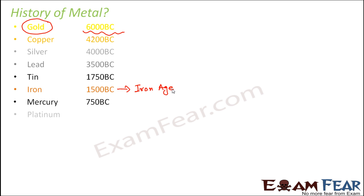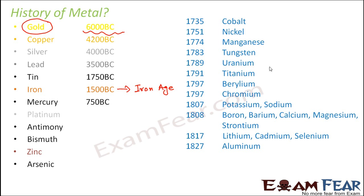Gradually, the process of discovering metals continued — mercury, platinum, antimony, bismuth, zinc, arsenic, and many more. We actually have a huge number of metals. Once the trend started, after gold was discovered, those with the instinct to explore kept their eyes open, knowing a new metal could always be found. That's how more and more metals got discovered.